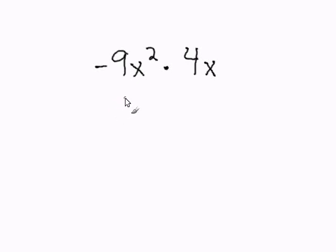Multiplying Variables. To multiply variables, we simply multiply the coefficient, which is the number in front of the variable, and then we multiply our variable. So let's start off by multiplying the coefficient.